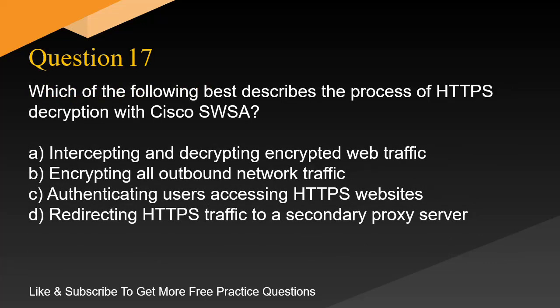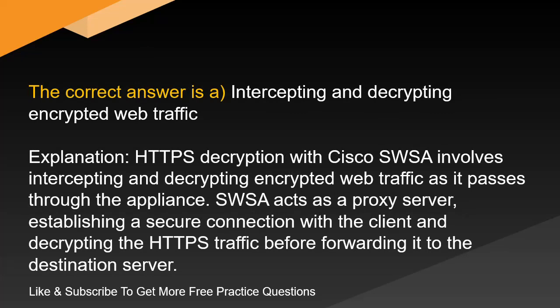Question 17. Which of the following best describes the process of HTTPS decryption with Cisco SWSA? A. Intercepting and decrypting encrypted web traffic. B. Encrypting all outbound network traffic. C. Authenticating users accessing HTTPS websites. D. Redirecting HTTPS traffic to a secondary proxy server. The correct answer is A. Intercepting and decrypting encrypted web traffic. Explanation. HTTPS decryption with Cisco SWSA involves intercepting and decrypting encrypted web traffic as it passes through the appliance. SWSA acts as a proxy server, establishing a secure connection with the client and decrypting the HTTPS traffic before forwarding it to the destination server.